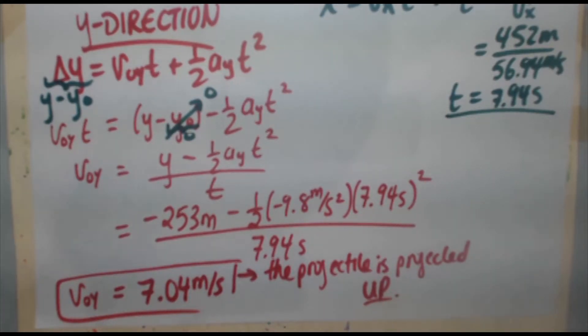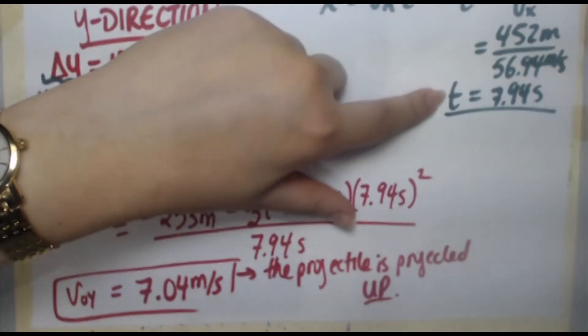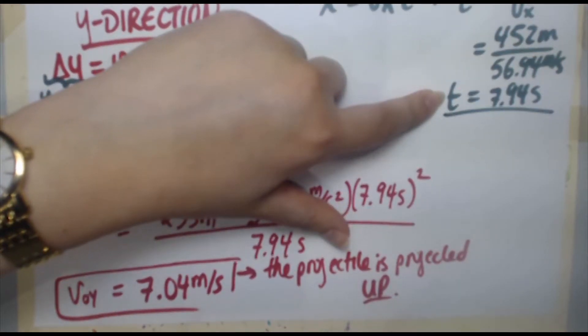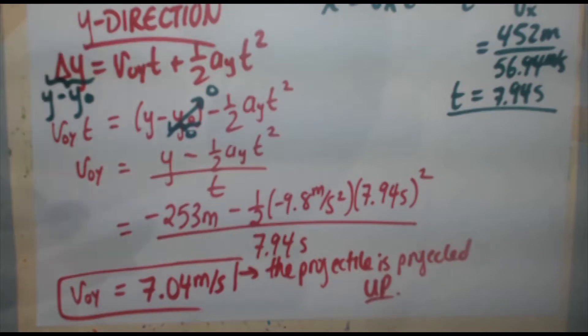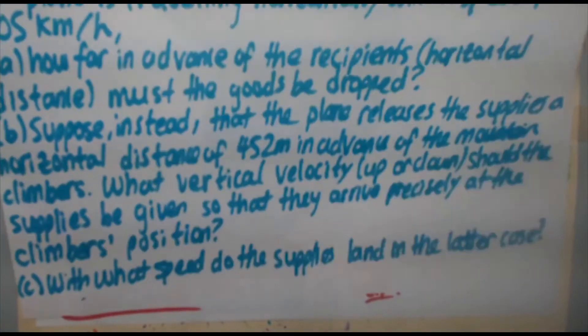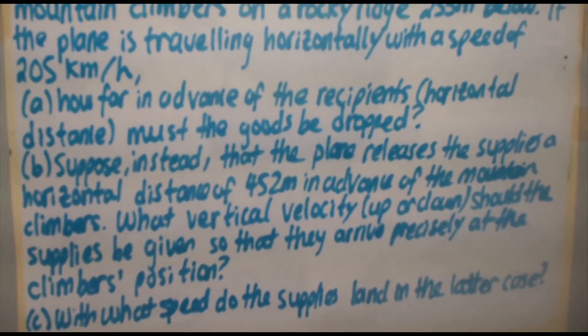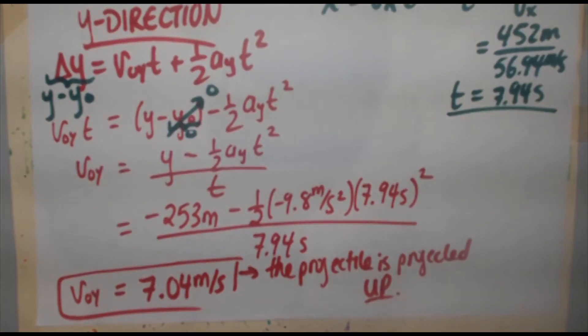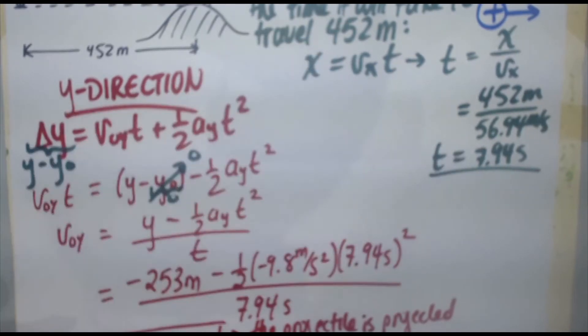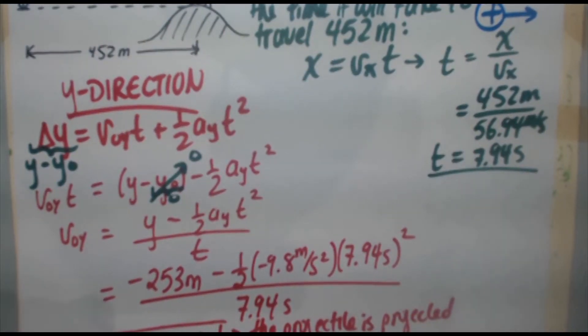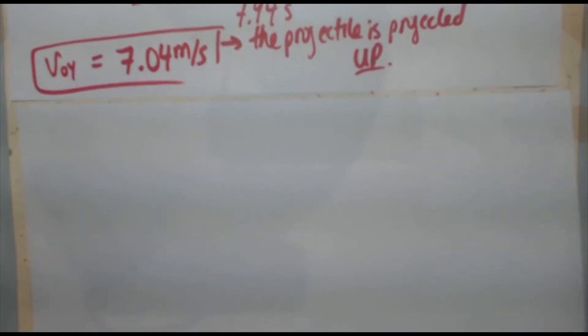So for part C, it says with what speed do the supplies land in the latter case. This is the initial speed it's projected at. We know it takes 7.94 seconds to travel that distance. So we have to find the final speed after the 7.94 seconds. Looking at the problem again, with what speed do the supplies land, speed has both a horizontal and vertical component. The horizontal component's not going to change from the initial problem, it's still going to be the 56.94 meters per second. We're going to use this time, this initial Y speed. We have to find the final Y speed.